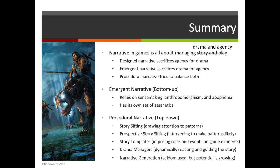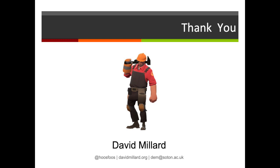In our second video, we looked in particular at emergent narrative — this kind of bottom-up approach that relies on sense-making, anthropomorphism, and apophenia, arguably has its own set of aesthetics, and requires you to design the game so that it has the space for those systems to kick in and help people perceive stories. In this video, we've looked at procedural narrative, more of a top-down approach, and in particular we've looked at five different methods: story sifting, which is drawing attention to patterns; prospective story sifting, which is then intervening to make those patterns more likely to occur; templates, which is about imposing roles and events on game elements; drama managers, which is dynamically reacting and guiding the story; and of course narrative generation systems, which aren't widely used but whose potential is growing. Procedural narratives are probably one of the most innovative and interesting areas of game research and game development, and it's going to be very interesting to see where the industry goes in the next few years, particularly with the next generation of artificial intelligence systems. I hope you've enjoyed the video and thank you for watching.